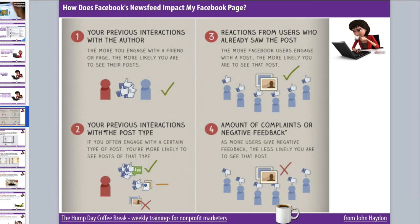For example, photos versus text updates versus links versus videos — the algorithm gets very specific about post type. Also, if a post from a page I've interacted with has gone viral — lots of people liking, commenting, and sharing it — Facebook will say, let's distribute this to more fans, because the content is receiving a lot more likes, comments, and shares compared to the average update from this page.